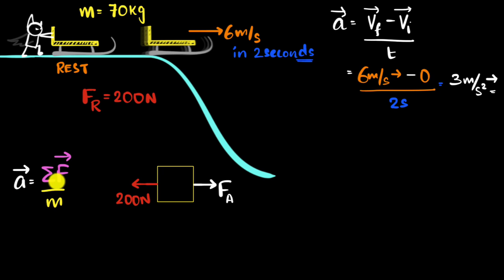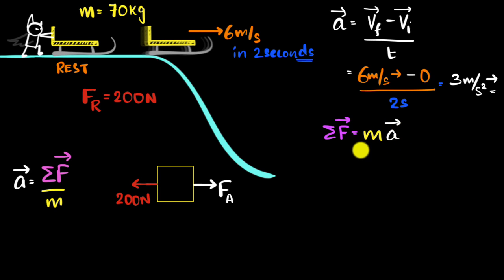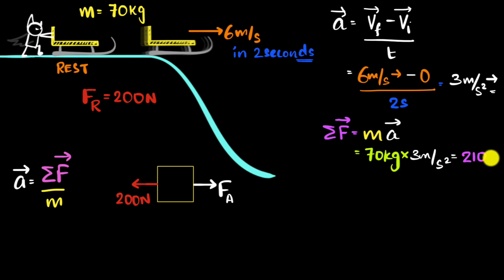Now I can plug in and figure out the net force. Rearranging Newton's second law, net force equals mass times acceleration. Plugging in: 70 kilograms times 3 meters per second squared. 70 times 3 is 210. So the net force is 210 Newtons to the right, since the acceleration was to the right.